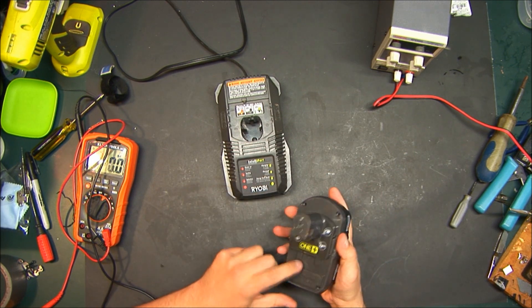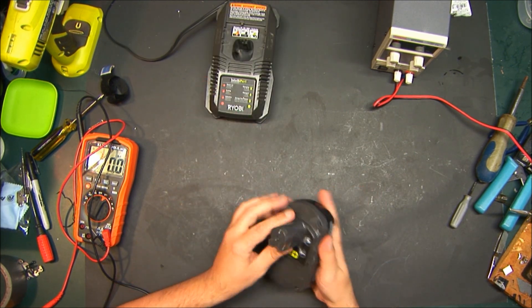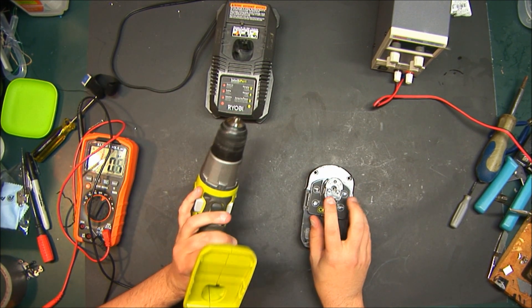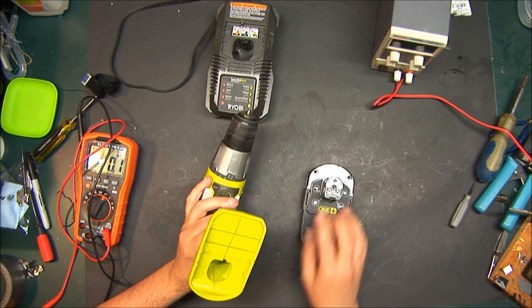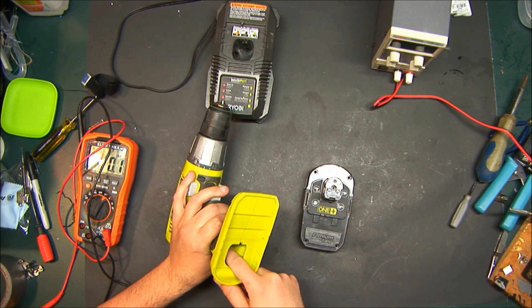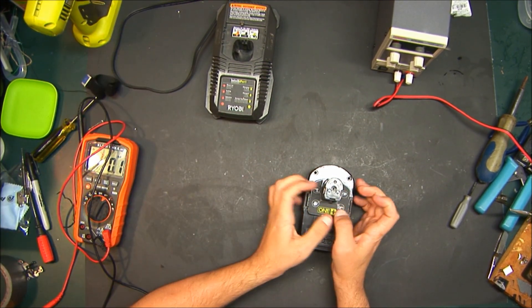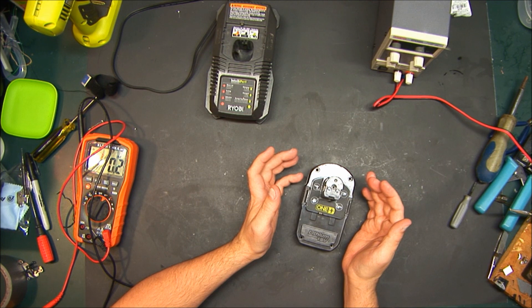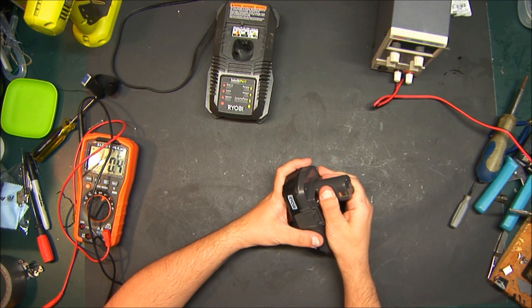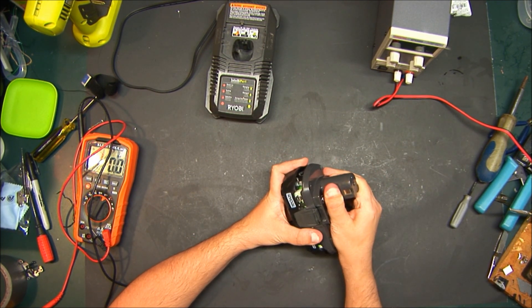I've already taken the screws out of here. The reason I know it's not another type of protection is because this drill only has two contacts, so it's only pulling direct current. If I were to put a meter on here like I did, I should get 18 volts or something close to it.